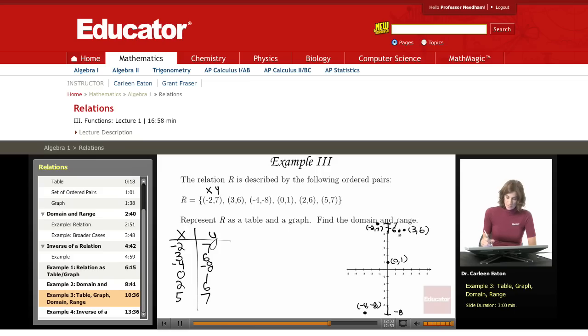And finally 5, 7. And what I have here are discrete points, so that is my graph of this relation.